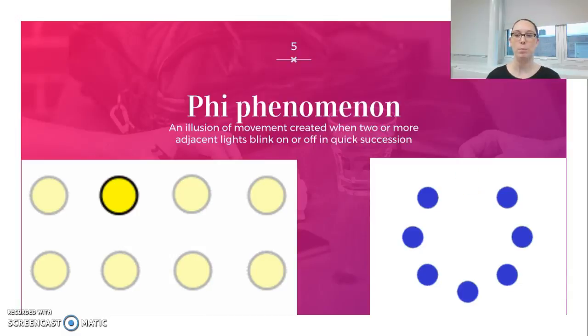So I've given you two different examples of this. The one involving the yellow lights is just a very simple example of the phi phenomenon. The light appears to be moving across the top and bottom row.